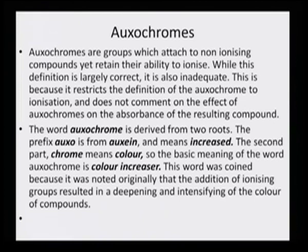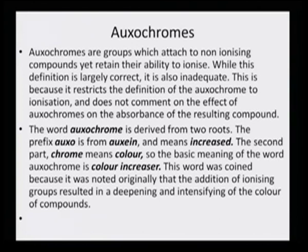The word oxochrome is derived from two roots. The prefix 'oxo' is from the Greek meaning 'increased,' and the second part 'chrome' means color — so the basic meaning of oxochrome is 'color increaser' or enhancer. This word was coined because it was noted originally that the addition of ionizing groups resulted in deepening and intensifying of the color of the compound when certain groups were also present. They themselves may not be chromophores — that means they are not conjugated systems — but they help the color to get deepened, and so they are known as oxochromes.